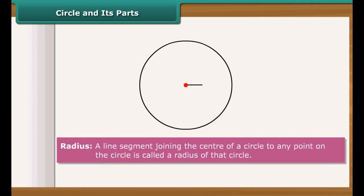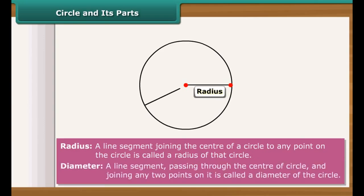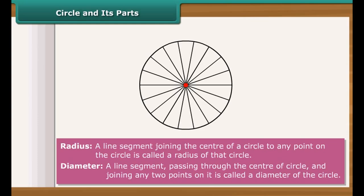Every point in circle is at equal distance from the center. A line segment joining the center of a circle to any point on the circle is called a radius of that circle. And a line segment passing through the center of circle and joining any two points on it is called a diameter of that circle.